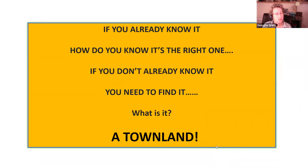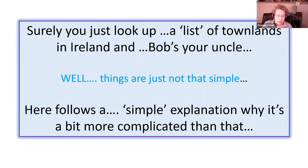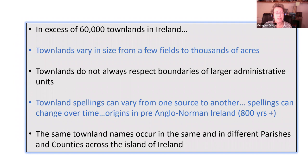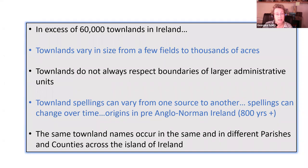This sums up the talk: if you already know it, how do you know it's the right one? And if you don't already know it, you need to find it. So what is it? It's a townland. Lots of people say just look up the list of townlands and everything will be fine, but everybody knows things are not just as simple as that. In Ireland, there are in excess of 60,000 townlands — most databases say between 60 and 64,000 — and there's a reason why it varies so much. Townlands vary in size from a few fields to thousands of acres, don't always respect boundaries of larger administrative units, and have their origins in pre-Anglo-Norman Ireland, so you're talking about 800 years of history.